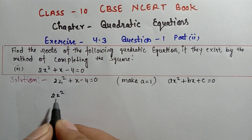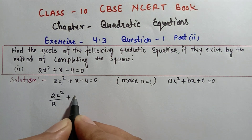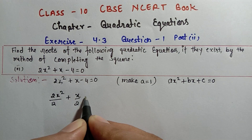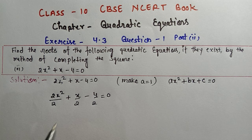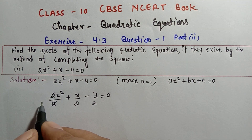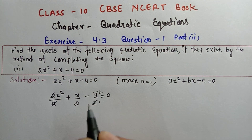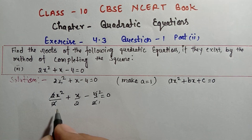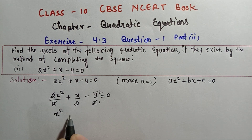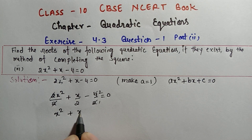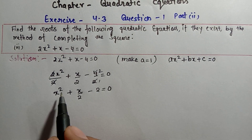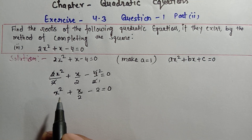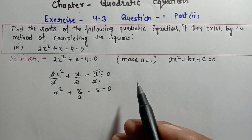Dividing throughout by 2: 2x²/2 + x/2 - 4/2 = 0. The 2s cancel out. So your new equation becomes: x² + x/2 - 2 = 0. Now the coefficient of x² is 1, so the first step is complete.